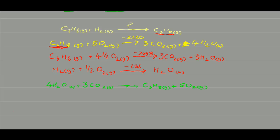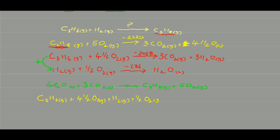This equation has propene and hydrogen together, and the propane combustion equation also has those species. So if I add these two equations together: C3H6(g) + 4.5O2(g) + H2(g) + 0.5O2(g) → 3CO2(g) + 3H2O + H2O.